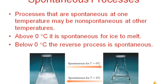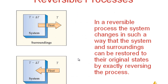Above zero degrees, ice melting is spontaneous; below zero degrees, the reverse process — freezing of water — is spontaneous. Now consider the system and surroundings kept at the same temperature T. If you add an amount of heat — call it delta T — to the system, the heat will slowly dissipate away to the surroundings. Heat flow from system to surroundings is the spontaneous process here.